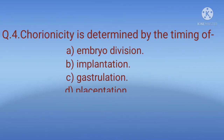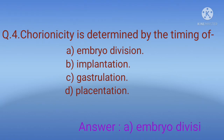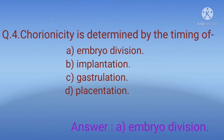Question 4: Chorionicity is determined by the timing of? Options: A) Embryo division, B) Implantation, C) Gastrulation, D) Placentation. The correct option is A, embryo division. In embryo division, for the first 12 hours after conception the fertilized egg remains a single cell; after 30 hours it divides from one cell into two.